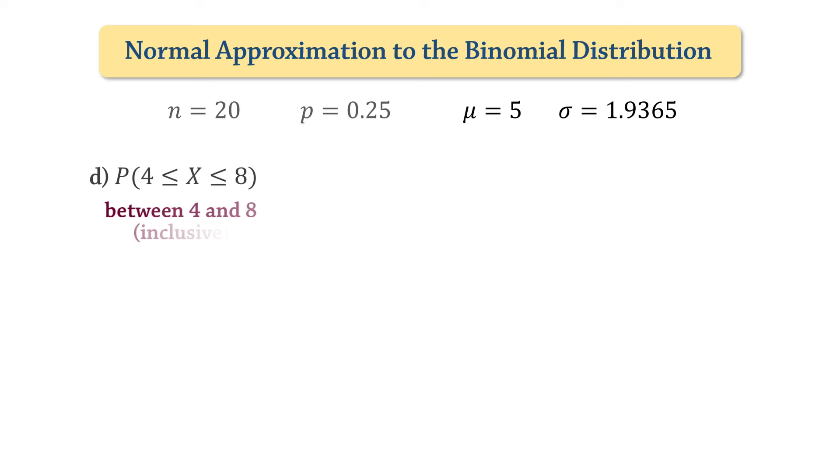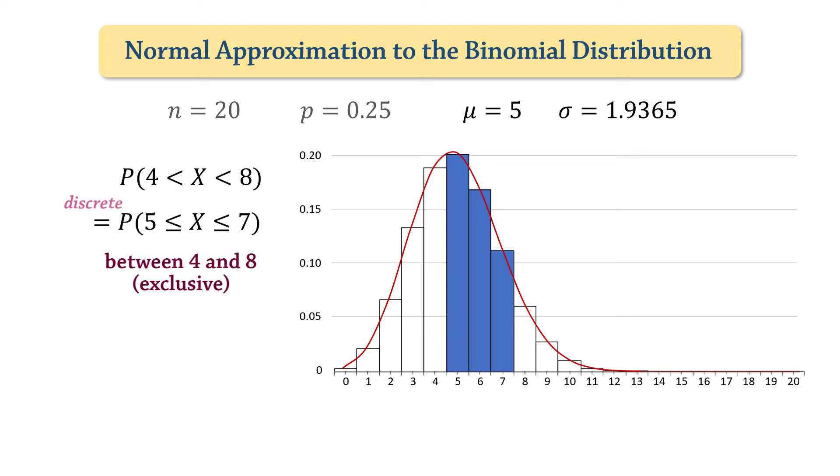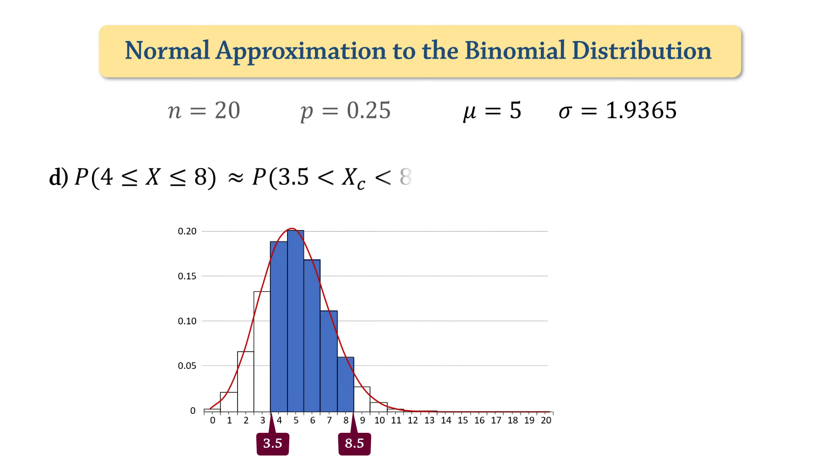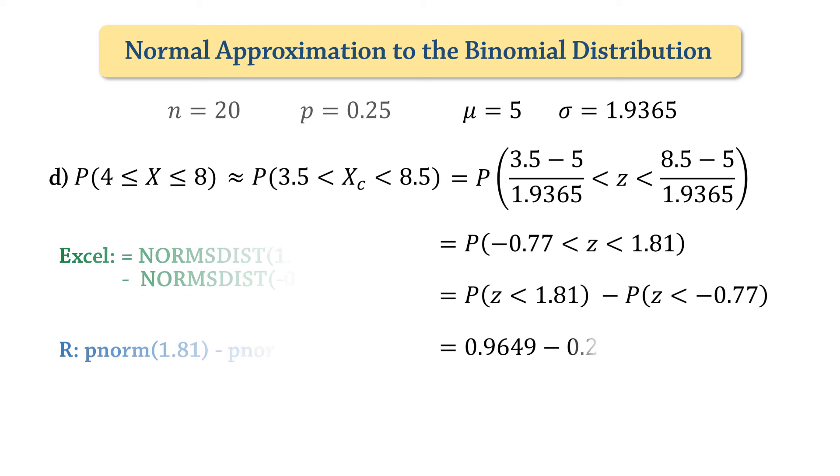Next, between 4 and 8 inclusive. We see here that the normal approximation must start at 3.5 and end at 8.5. If this had been 4 to 8 exclusive, the discrete equivalent will be from 5 to 7, and the normal approximation for that will have consisted the area between 4.5 and 7.5. Back to the inclusive case. On applying continuity correction and standardizing, we have the approximate probability that z is between negative 0.77 and 1.81, which gives 0.7443.